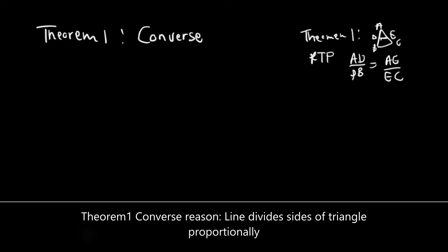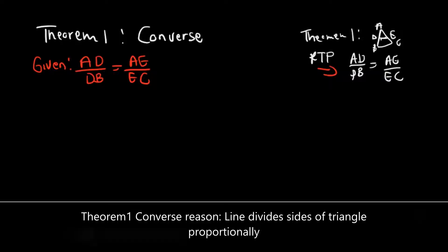Now in the converse of Theorem 1, we are given that AD over DB is equal to AE over EC.